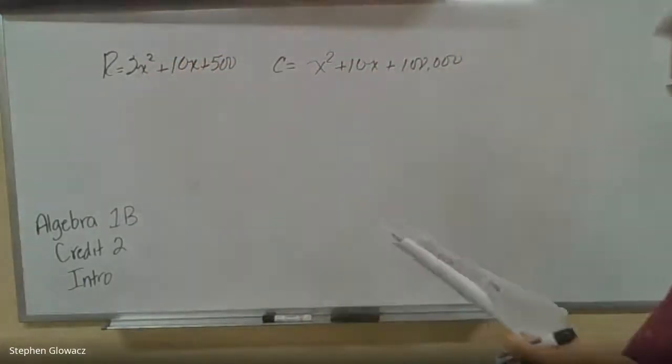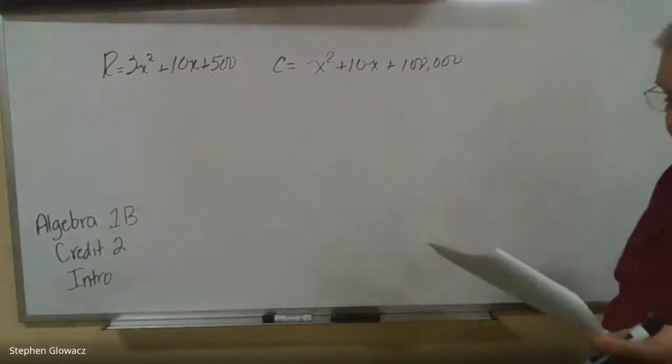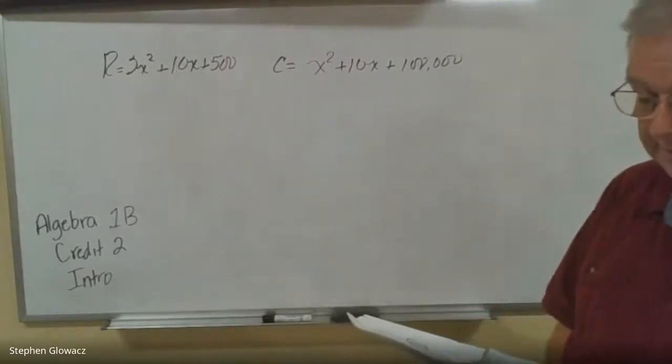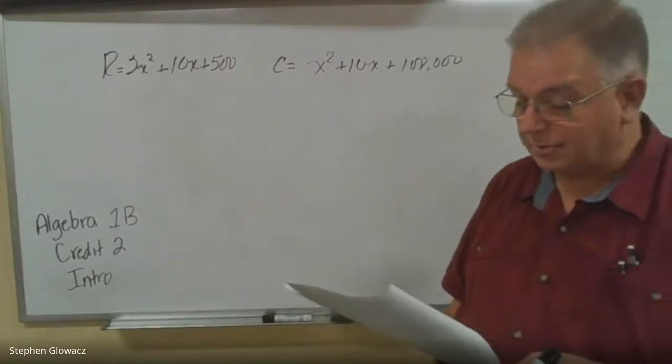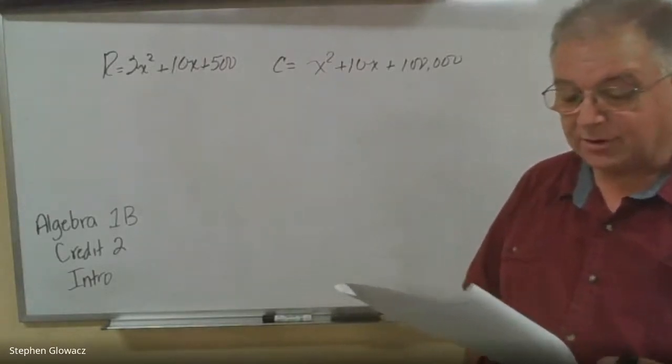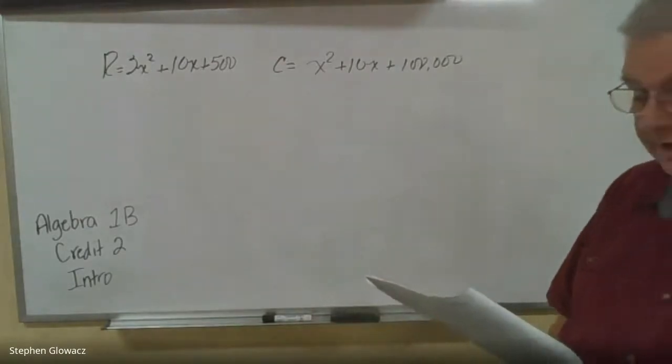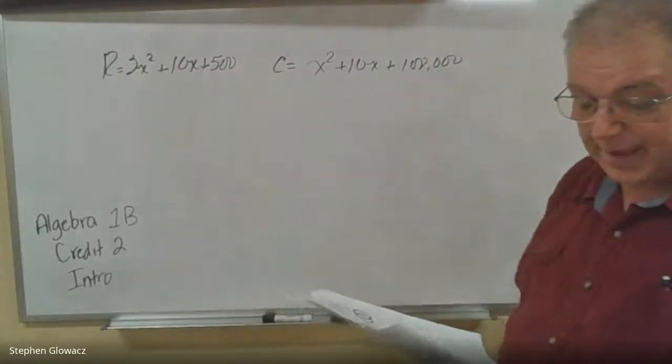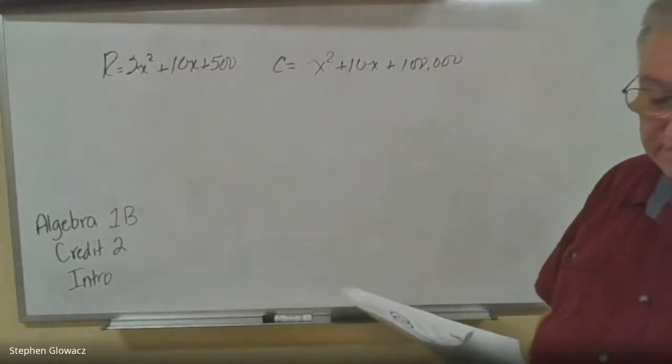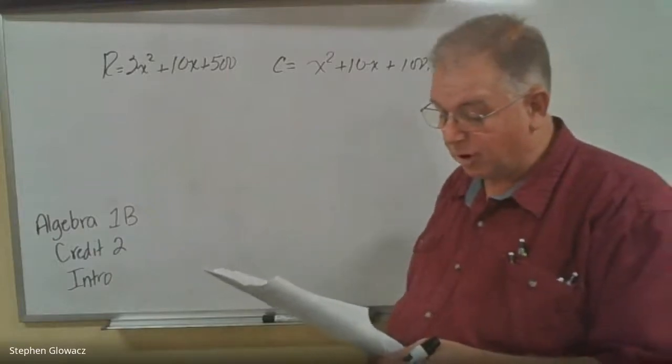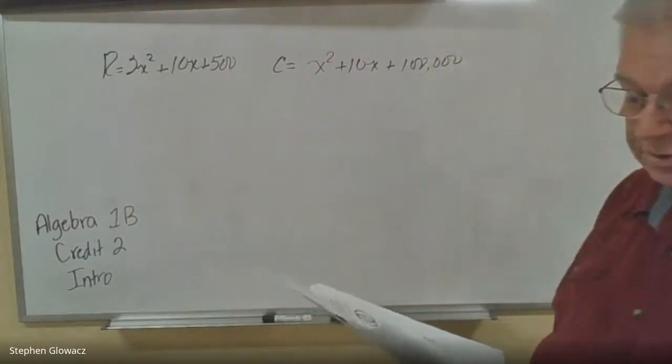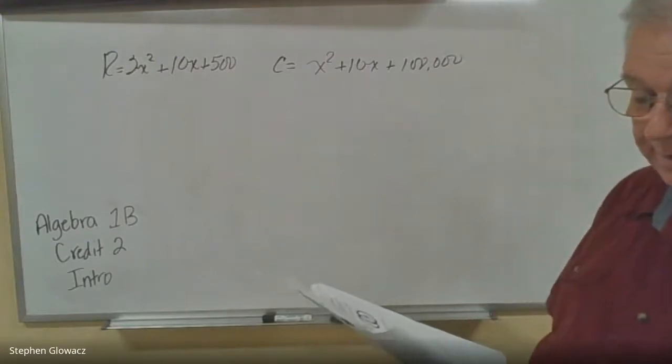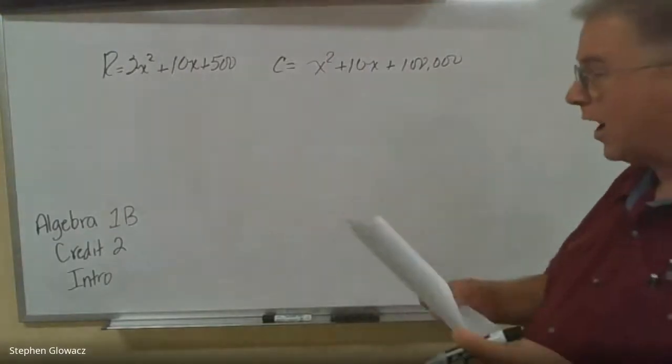In manufacturing, profit represents the amount of income that remains after your company pays for all of its operating costs. You calculate net profit by subtracting your company's cost of producing goods from its revenue. So profit is equal to the revenue minus the cost. Use the equations for cost C and revenue R to write a simplified algebraic expression that represents the profit P that your company makes from selling Y bicycles.